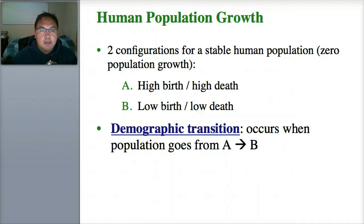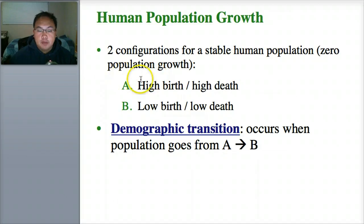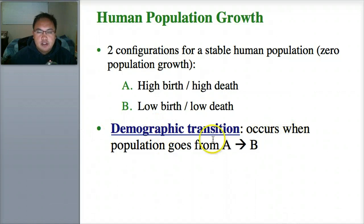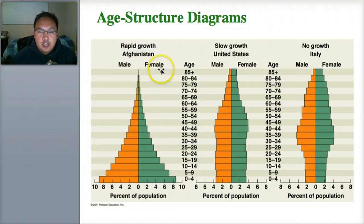The last thing we'll talk about is human population growth. There are two configurations for stable human population growth: high birth and high death, or low birth and low death. This is called the demographic transition. One way to chart human population growth — used only for humans — is called age structure diagrams.